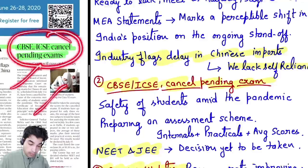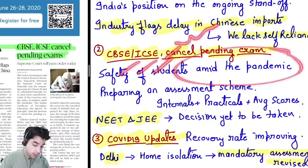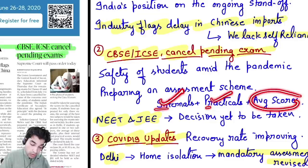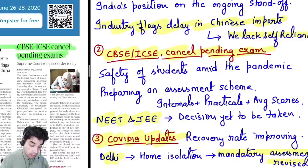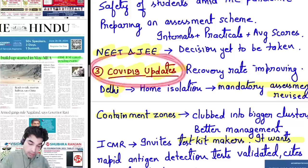Second news: CBSE and ICSE have cancelled pending exams. Because of the lockdown, exams were pending, and now those pending exams have been cancelled. The safety of students during the pandemic is paramount — it is the priority. An assessment scheme is being prepared based on internals, practicals, and average scores of students. Accordingly, students will be passed to the next class. Decisions on NEET and JEE exams are still pending.